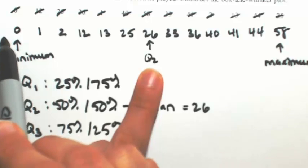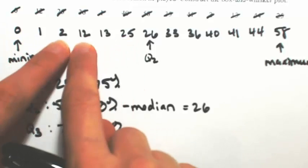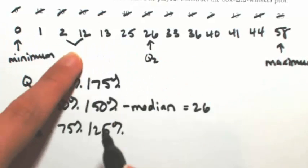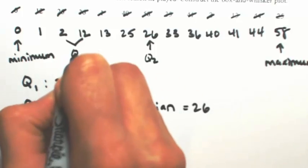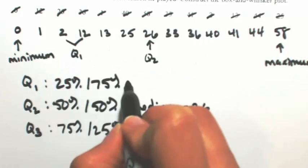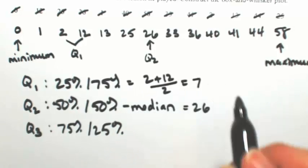So working inwards, Q1 is going to be the average of 2 and 12. So that's going to be 2 plus 12 divided by 2 or 7.